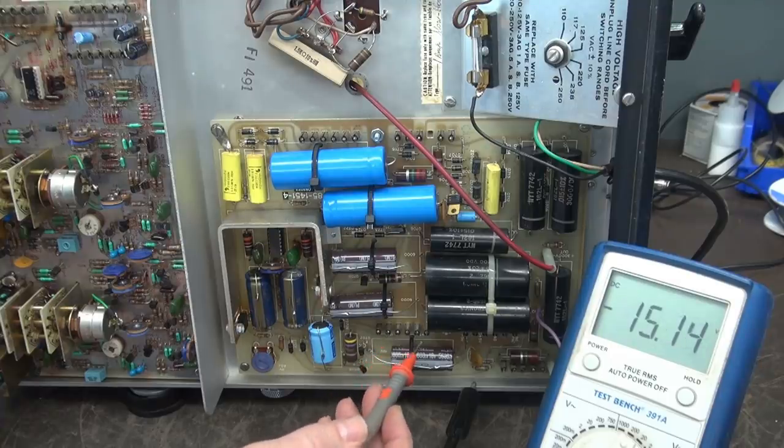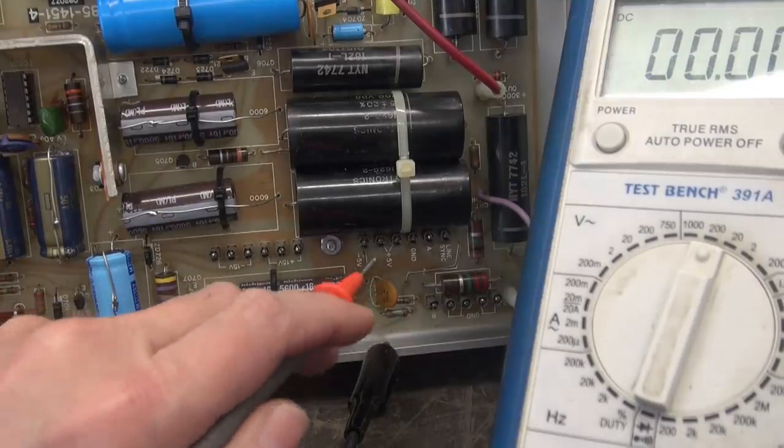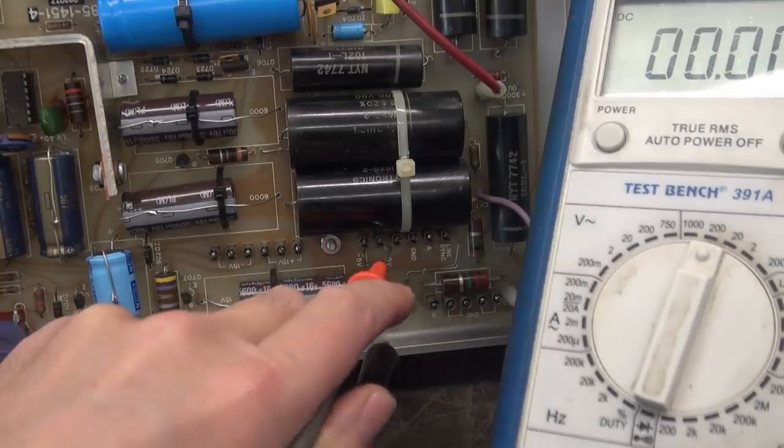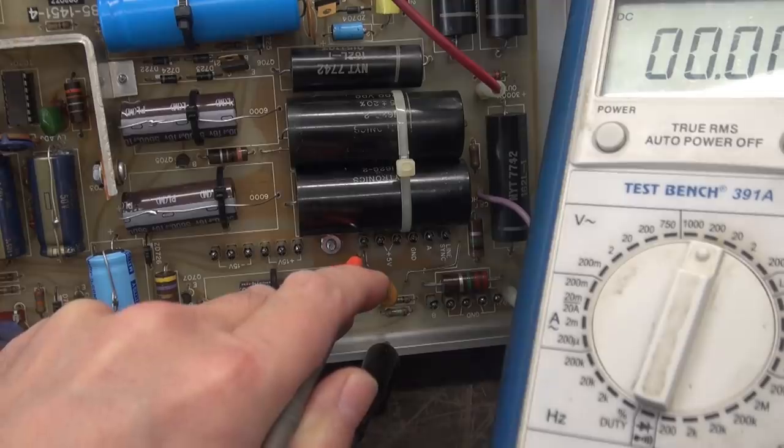There's a negative 15. Positive 15. So here's a better view of the terminals with the power supplies identified. You can see your plus five here. There's a negative five here.